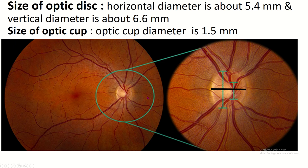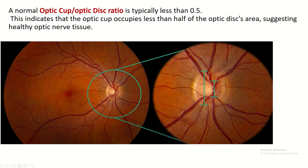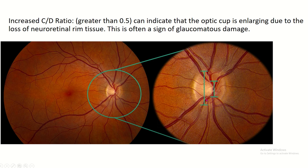The optic disc has a horizontal diameter of 1.5 mm and a vertical diameter of 1.76 mm. The side of the optic disc is approximately 1.5 mm. The normal optic cup to optic disc ratio is typically less than 0.5. This indicates the optic cup occupies less than half of the optic disc area, suggesting healthy optic nerve tissue.